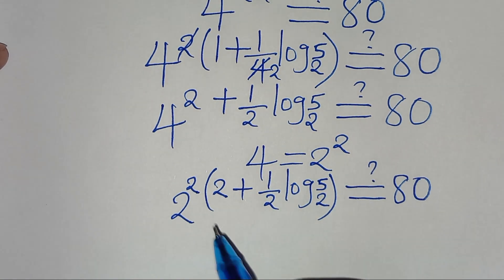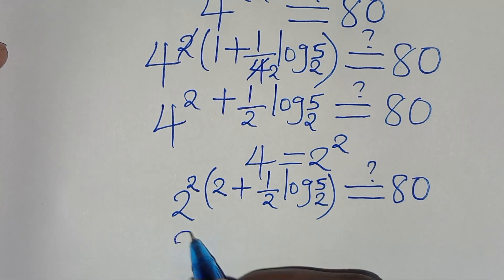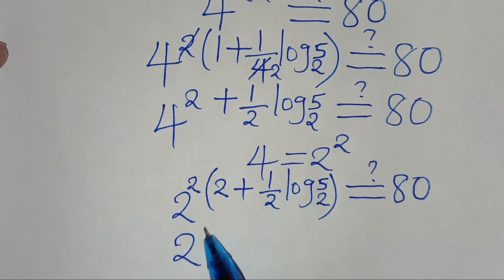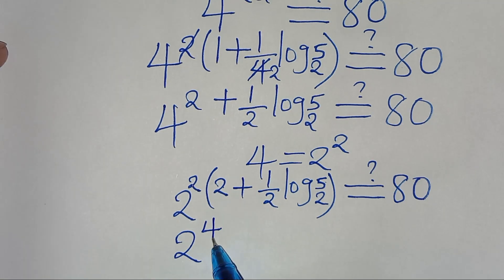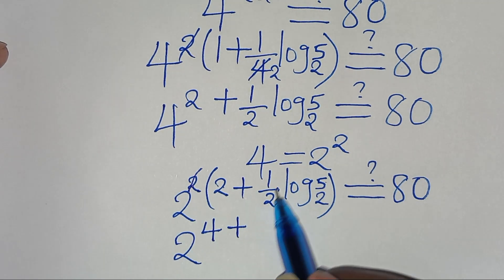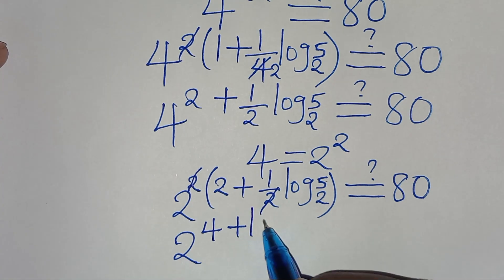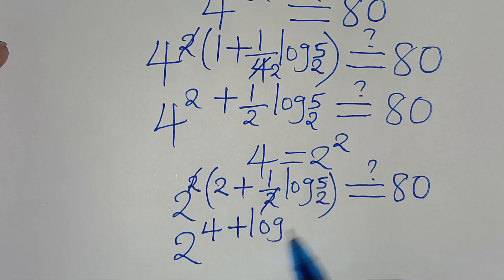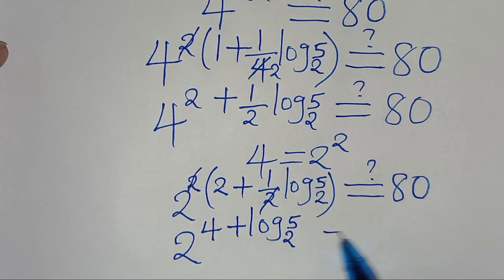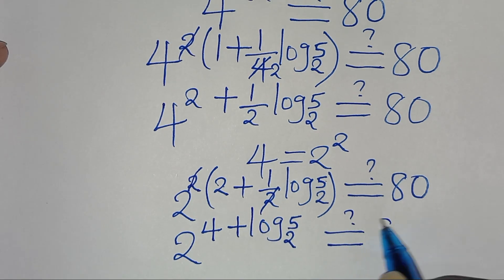Opening the parentheses again, we have 2 to the power of 2 times 2, which is 4, plus 2 and 2 simplify, giving us plus log₂5. This should give us a value of 80.